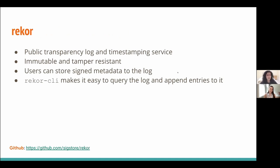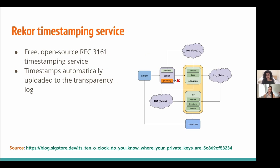The next tool in the SIGSTOR ecosystem is called REKOR, which is the public transparency log. It's an immutable and tamper-resistant log in which users can store signed metadata. There's a REKOR CLI which makes it easy to query anything that's been uploaded to the log, as well as append new metadata entries. One of the cool features of REKOR is that it also provides, by default, a timestamping service using the RFC 3161 timestamping standard. This automatically timestamps anything uploaded to the log so you can ensure timeliness properties about the things included in the log.